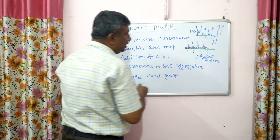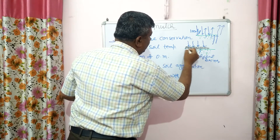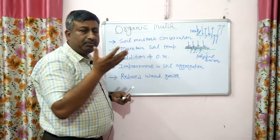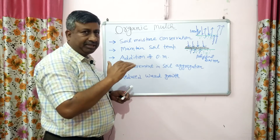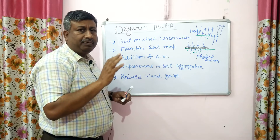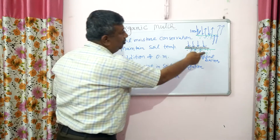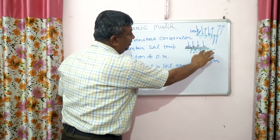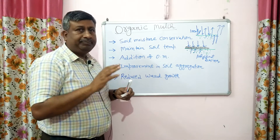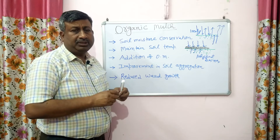Second, whatever moisture would evaporate through capillary action is also restricted because the residue acts as a physical barrier. So the moisture coming from the deeper layer to the upper layer through capillary action remains in the root zone and there is no evaporation of soil moisture. This is the reason that when we apply mulch, there is soil moisture conservation.